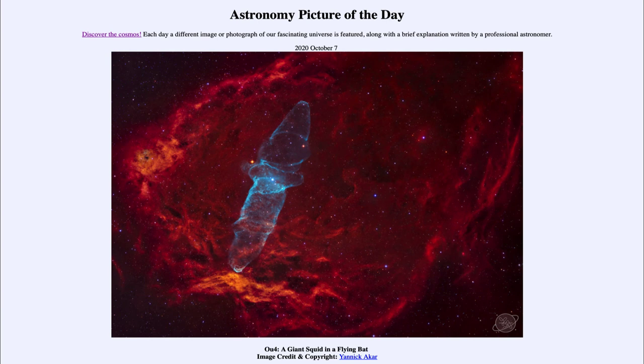From the hydrogen gas glowing to the oxygen glowing, and in fact the shape of the squid nebula that we see today—all caused in part by those stars. That was our picture of the day for October 7th, 2020, titled 'OU4: A Giant Squid in a Flying Bat.' We'll be back again tomorrow for the next picture. Until then, have a great day everyone, and I will see you in class.